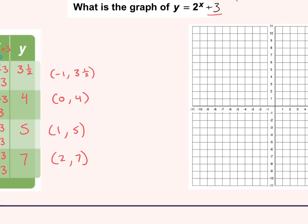So we go to our graph and plot our points. First point: left to negative 1 and up 3 and one half. Next: stay on 0, go up 4. Then right 1, up 5. And last, 2 to the right and up 7. So our graph keeps that same shape — the only difference is I just shifted it up 3 spots. Is this exponential growth or decay? Growth — since the base is greater than 1, it's growth, and we can see the graph is getting bigger.